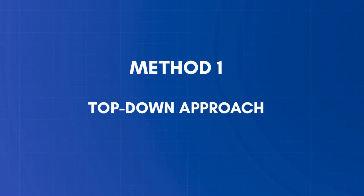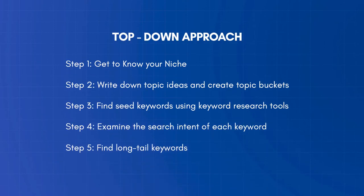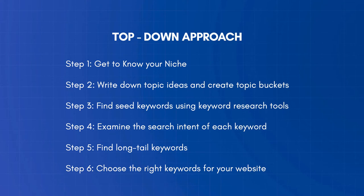Let's get started with the first method, the top-down approach. This is the traditional way of doing keyword research. The process involves several steps to transform your general ideas into keywords that meet our set criteria — i.e., with traffic potential, aligned with our business objectives, and realistic.